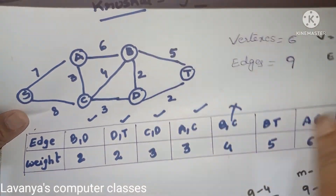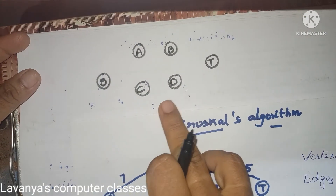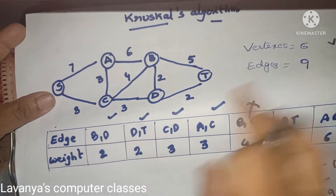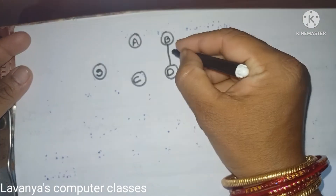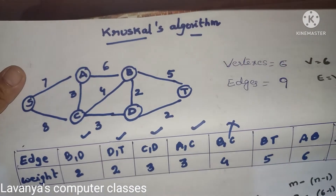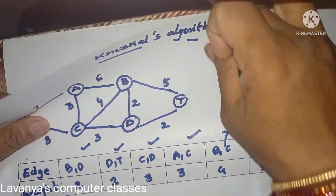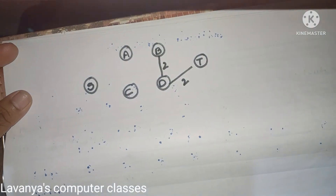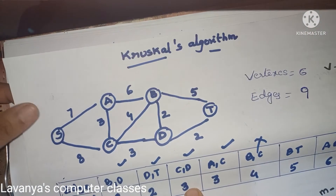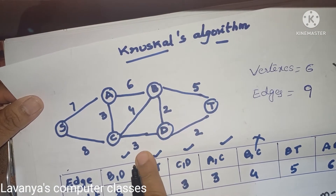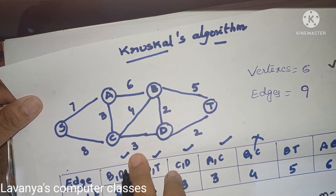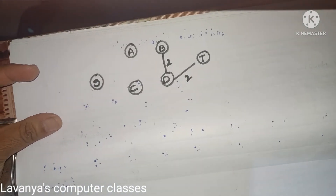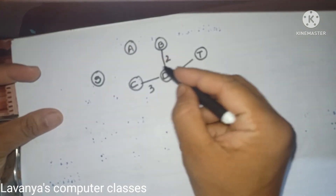Whenever we select an edge, we add it to the graph, but first check that it does not form a cycle. The minimum edge is B–D, so take B–D with weight 2 — no problem. Next minimum edge is D–T with weight 2, so add D–T. Next minimum is 3: select C–D with weight 3. No cycle is formed, so we take it. Next is A–C with weight 3 — check for cycle — no cycle, so we take it too.